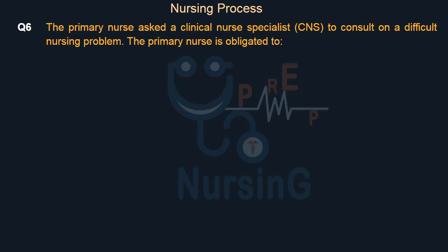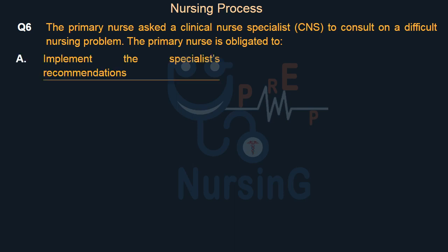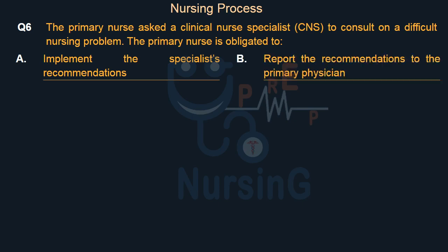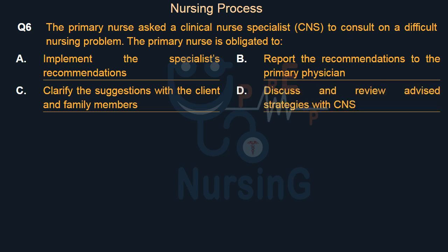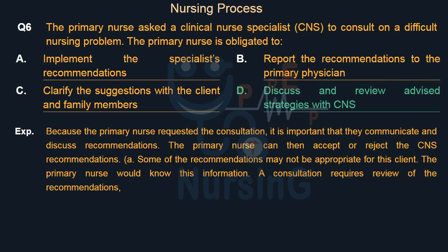The primary nurse asked a clinical nurse specialist (CNS) to consult on a difficult nursing problem. The primary nurse is obligated to — Option A: Implement the specialist's recommendations. Option B: Report the recommendations to the primary physician. Option C: Clarify the suggestions with the client and family members. Option D: Discuss and review advised strategies with CNS. Right answer is Option D: Discuss and review advised strategies with CNS. Because the primary nurse requested the consultation, it is important that they communicate and discuss recommendations.